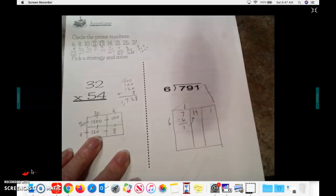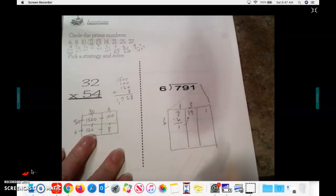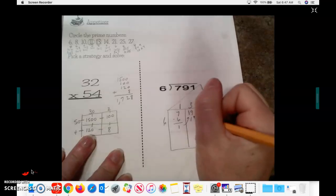Move the 1 up next to the 9. 6 goes into 19. I know I can multiply 3 times 6 and get 18. Subtract to get 1. Move it up.